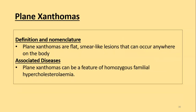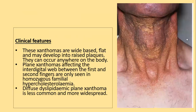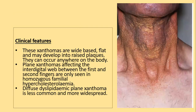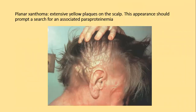Plane xanthomas are flat, smear-like lesions that can occur anywhere on the body. They are a feature of homozygous familial hypercholesterolemia. They are wide-based, flat, and develop into raised plaques, and can affect the interdigital web, especially between the first and second finger, mainly in homozygous familial hypercholesterolemia. Diffuse dyslipidemic plane xanthomas are less common and more widespread. Extensive yellow plaques seen on the scalp should always raise suspicion of paraproteinemia.